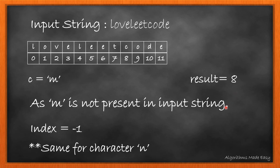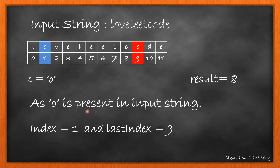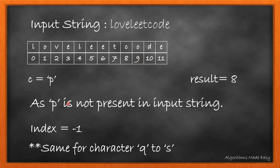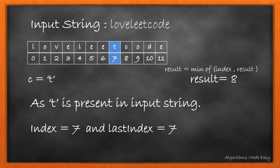Since M is not present in the input string, we move to the next character. Same for N. Now comes O — we can see that the first and last index of O are different, so again we do not update the result and move ahead. Characters P to S are not present in the string, so we skip those. T is present in the string and its first and last index is 7 as it appears only once. As 7 is less than 8, we update result to 7.